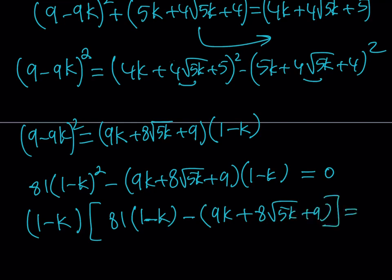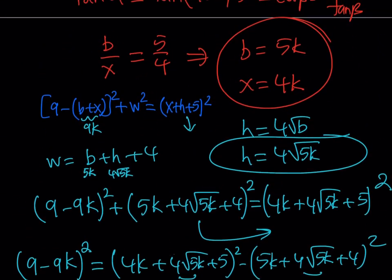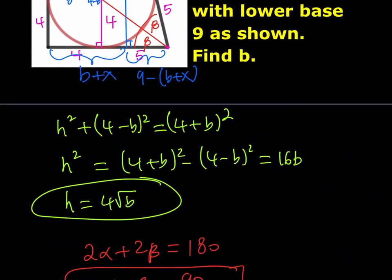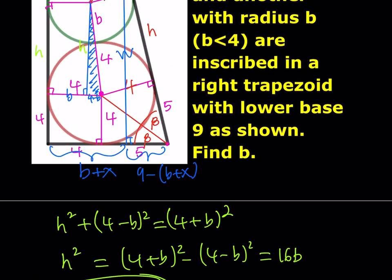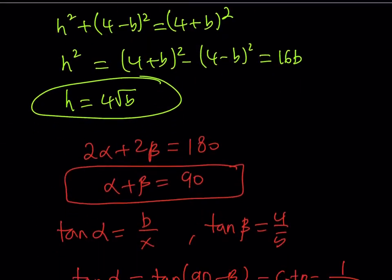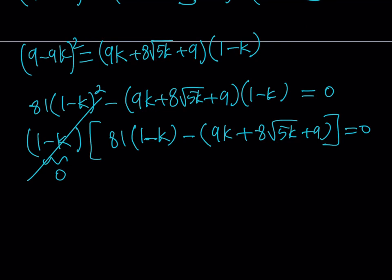From this equation, we can factor out (1 − k). One solution is k = 1, but that gives b = 5, which violates the requirement that b < 4. So k = 1 is not valid and we reject it. We focus on the remaining factor.